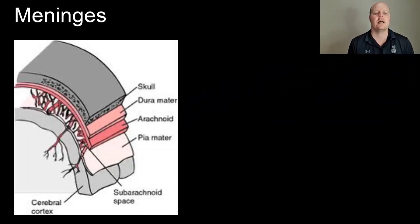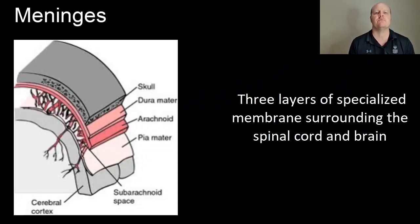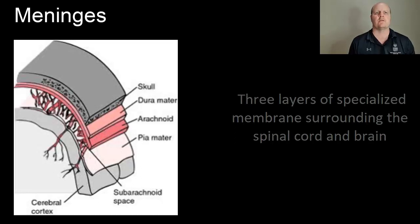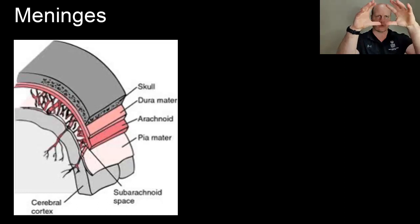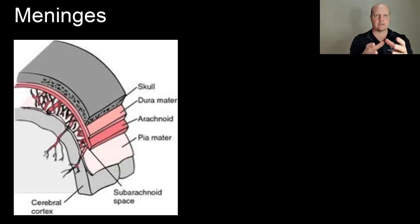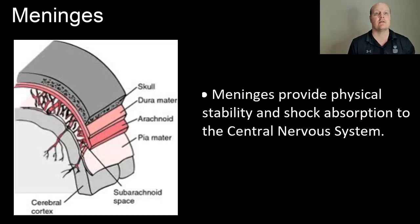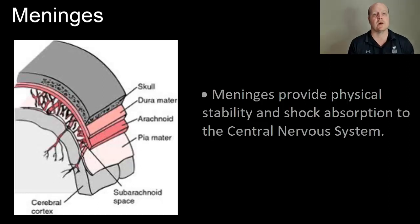The meninges are three layers of specialized membrane that surround the spinal cord and the brain. If you think of them as being like three layers of glad wrap that our brain and spinal cord get encased by. The function of the meninges is to provide physical stability and shock absorption to our brain and our spinal cord.